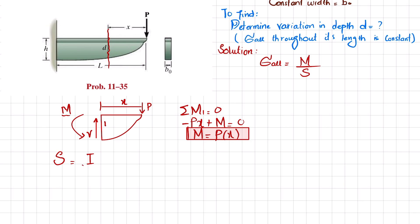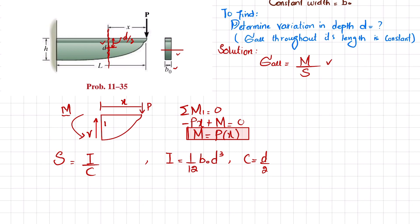Now we have the moment. We will find the section modulus. Section modulus S is equal to I divided by c, where I is the second moment of inertia and c is the distance from the neutral axis to the topmost fiber. For this cross section, I is equal to (1/12) times b naught times d cubed. The distance c from the neutral axis to the top is c equals d divided by 2.